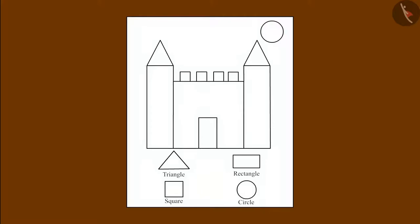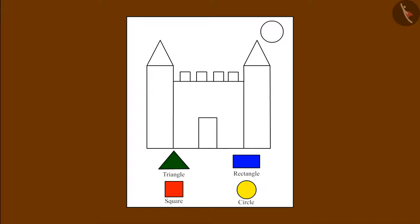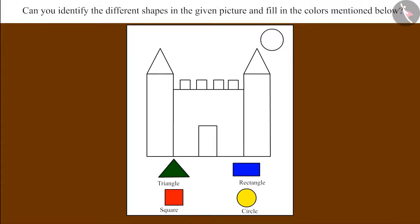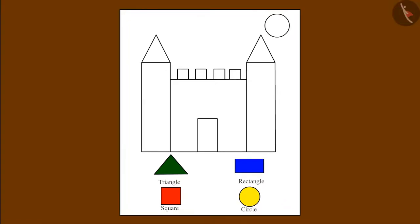Chootu and Pinky have been given a picture made of different shapes, and they have to identify the shapes and fill them with different colors: yellow for circles, blue for rectangles, red for squares, and green for triangles. So children, all the circles in this picture have to be filled with yellow color. Can you identify the circle in this picture? Yes, this is a circle — it will be filled with yellow color.